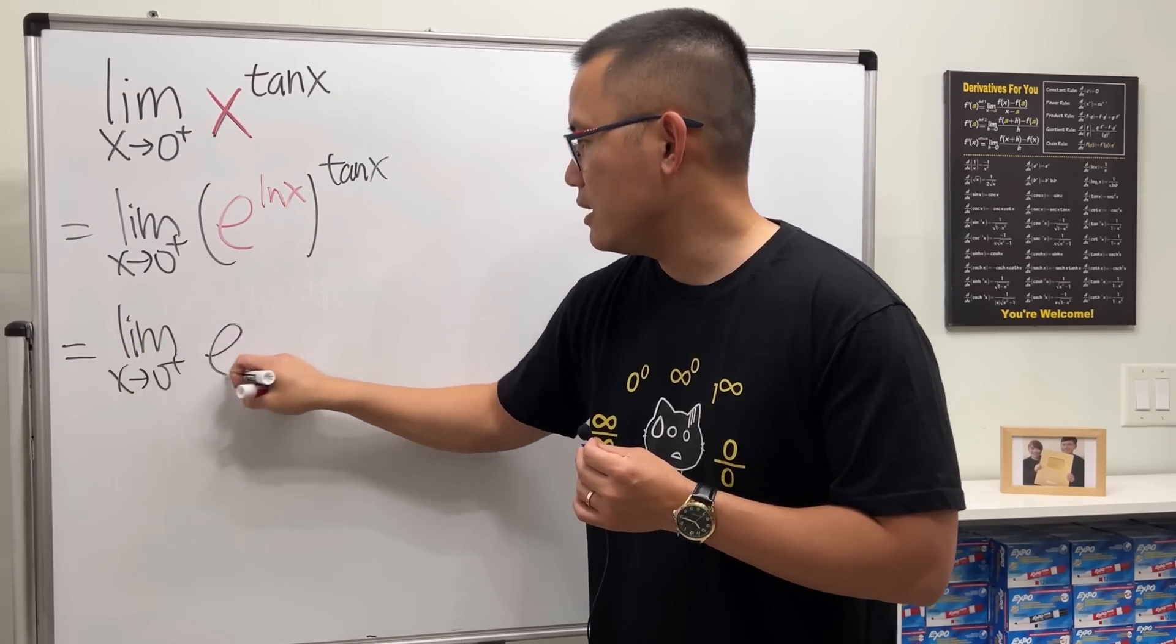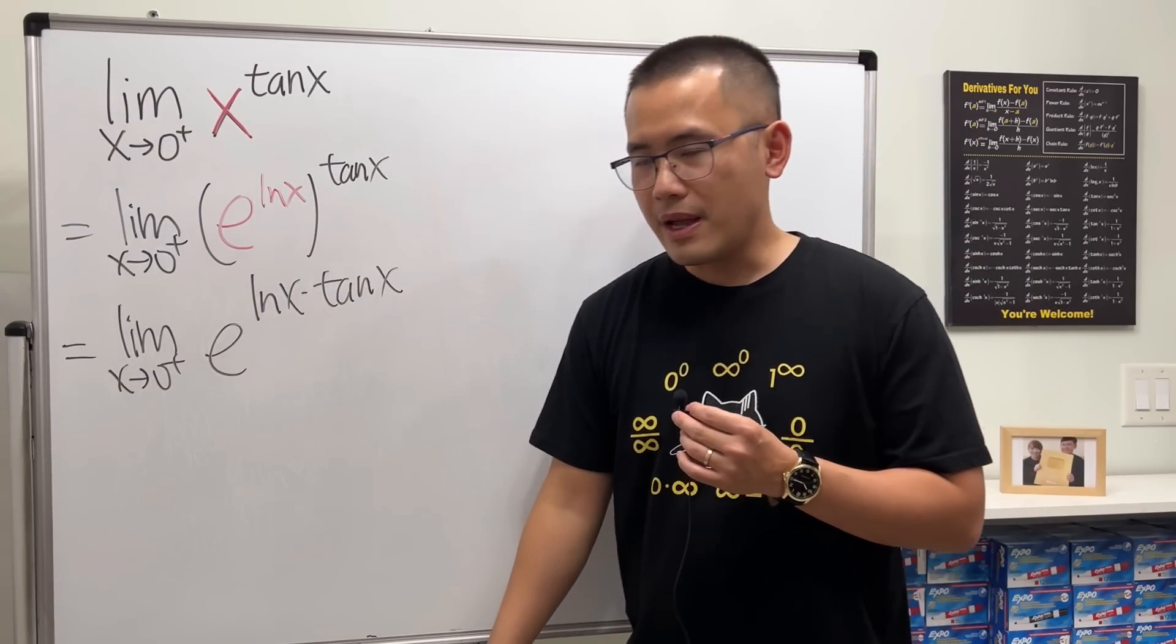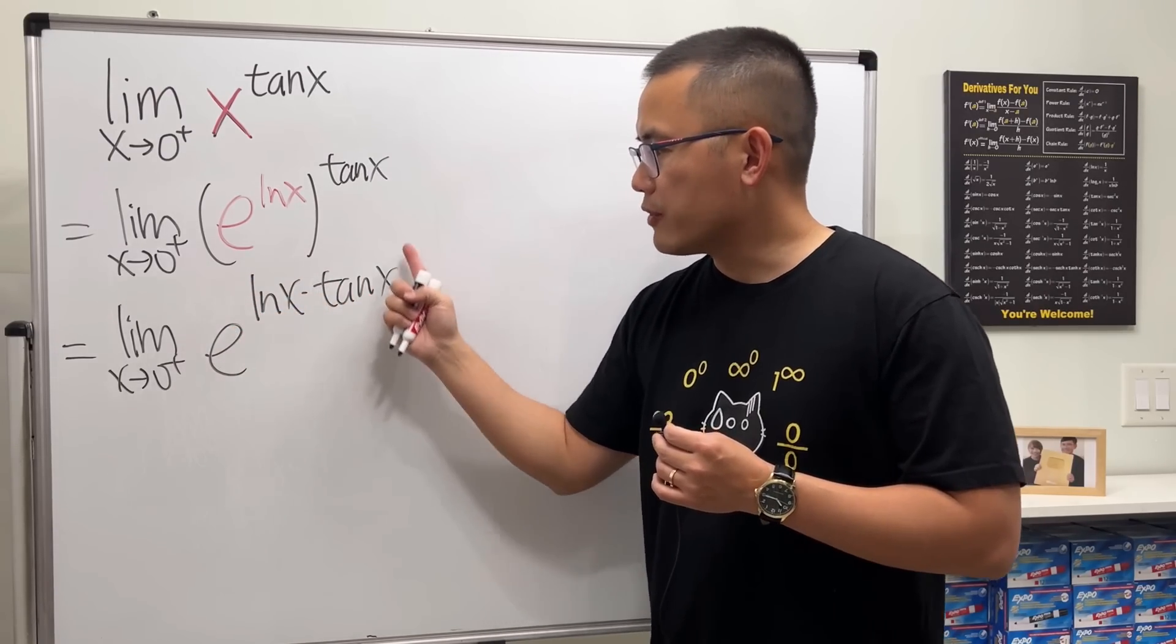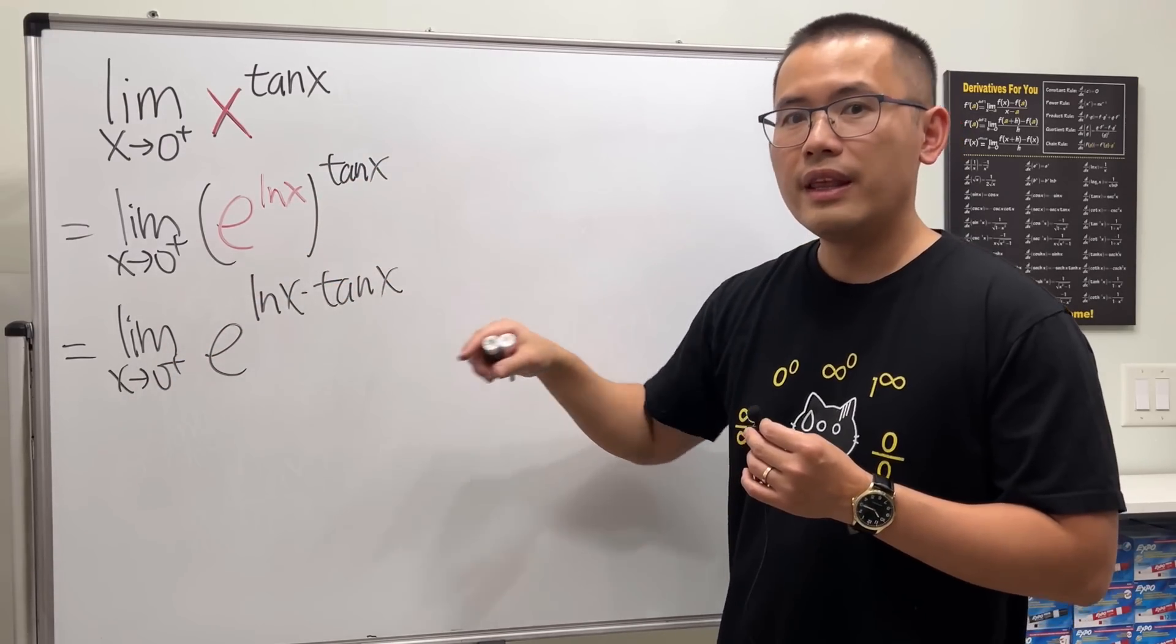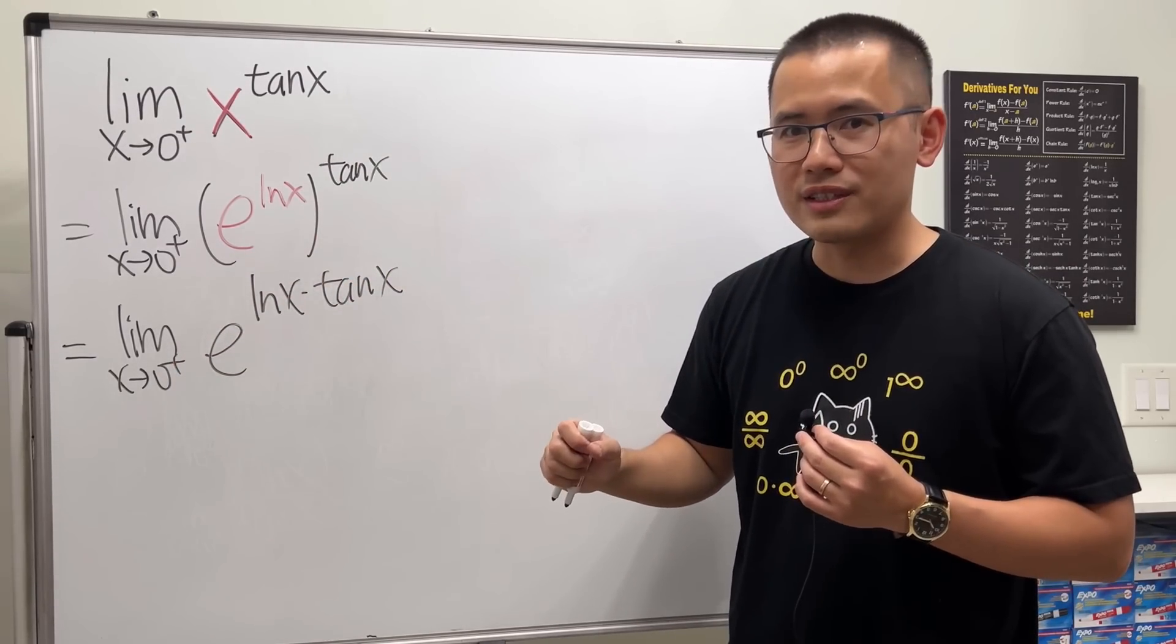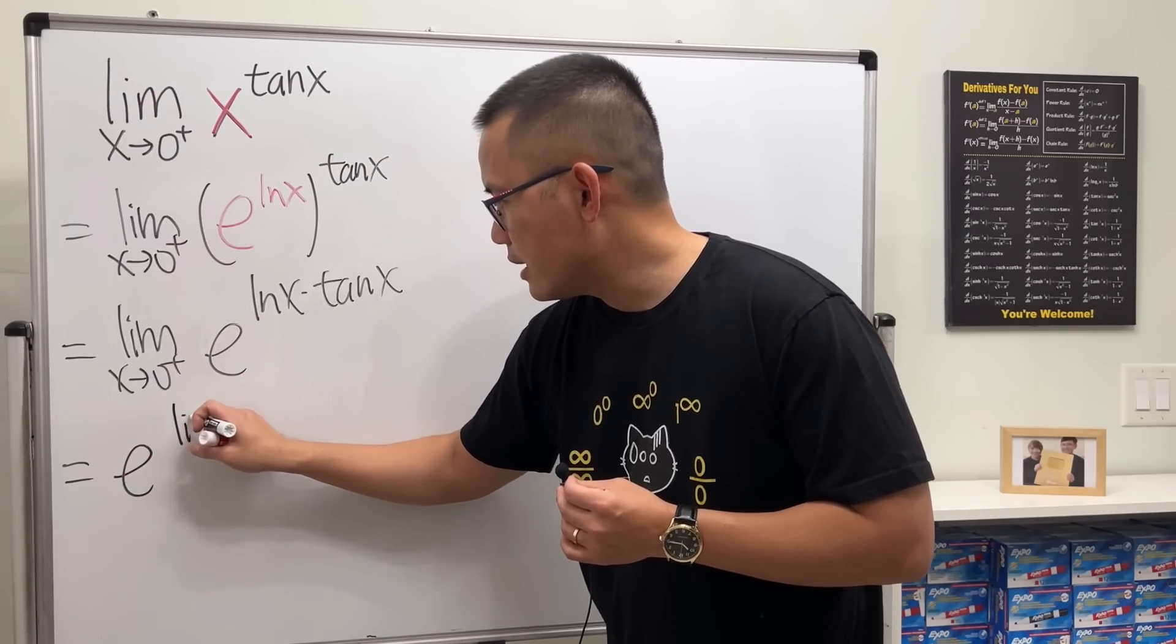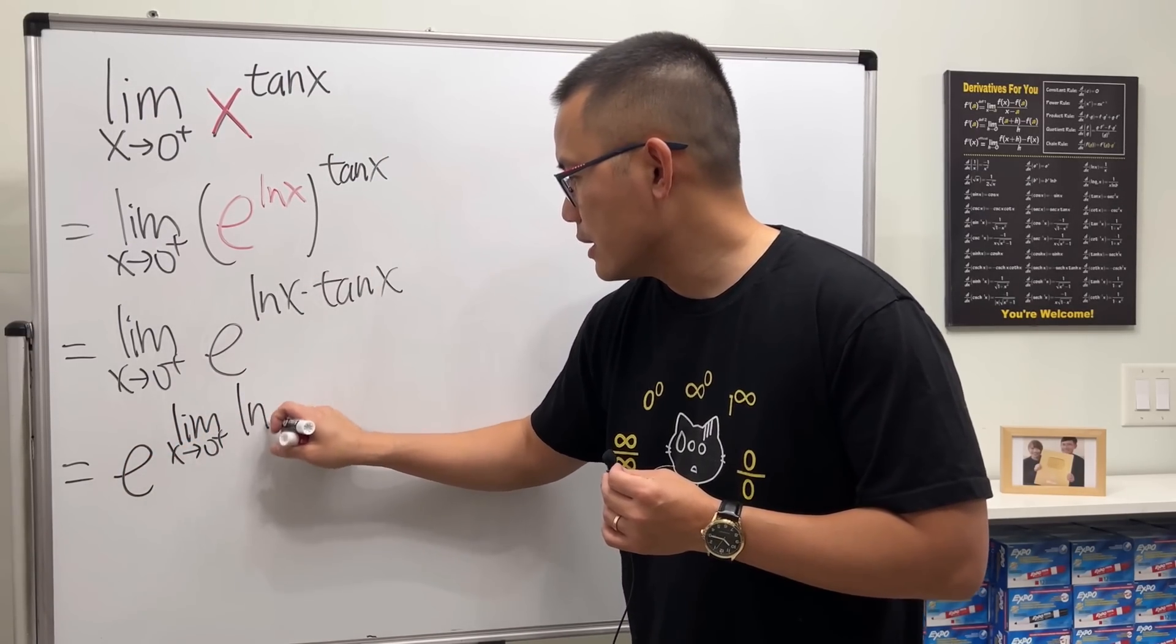So we have e and then ln x times tangent x. Now when we're taking a limit like this, e to this power, we can just focus on taking the limit of the power, and then at the end just do e to that result. And we can do so because e to the x is a continuous function. So what we are going to do is put down the e, and then focus on taking the limit, and then just this right here.